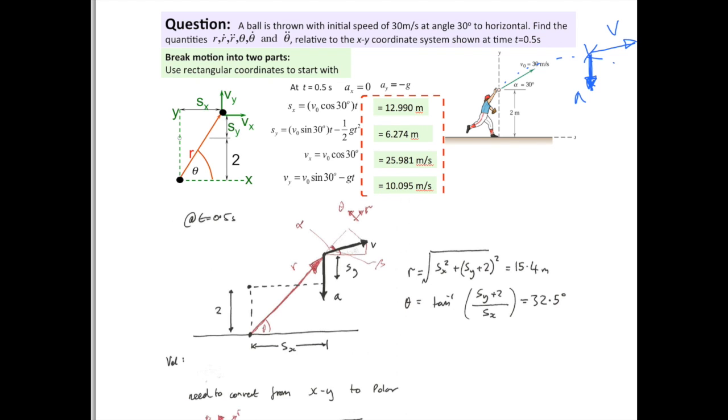So, the first stage is to find the x and y components of the speed at this point here. After 0.5 of a second, we know that Sx and Sy is as follows. This is the displacement that the ball has traveled. So, this is the distance from the point that it leaves here, Sx.